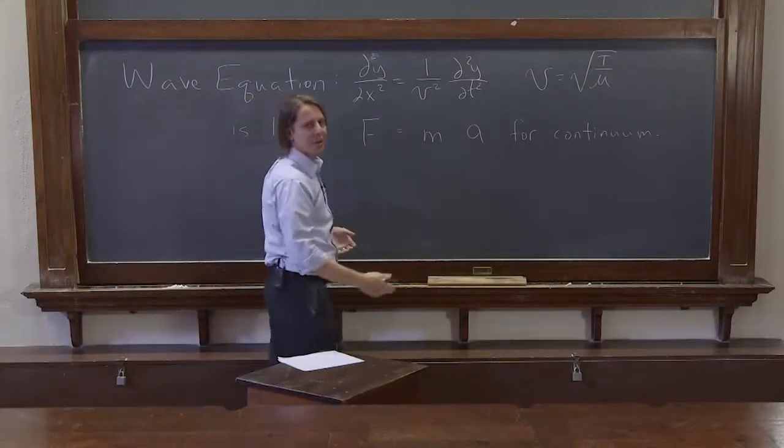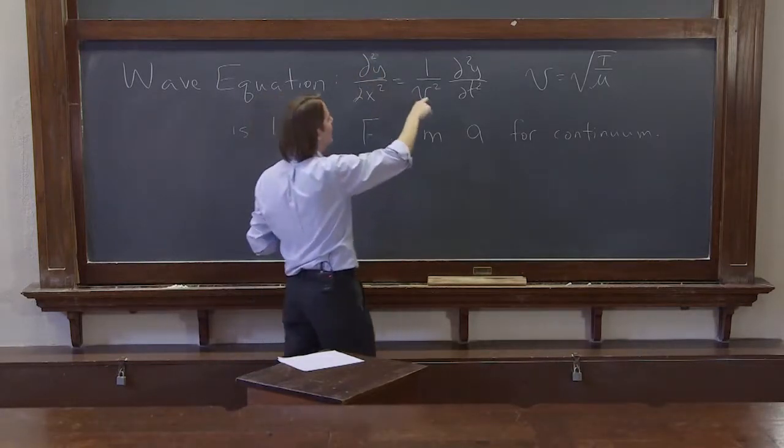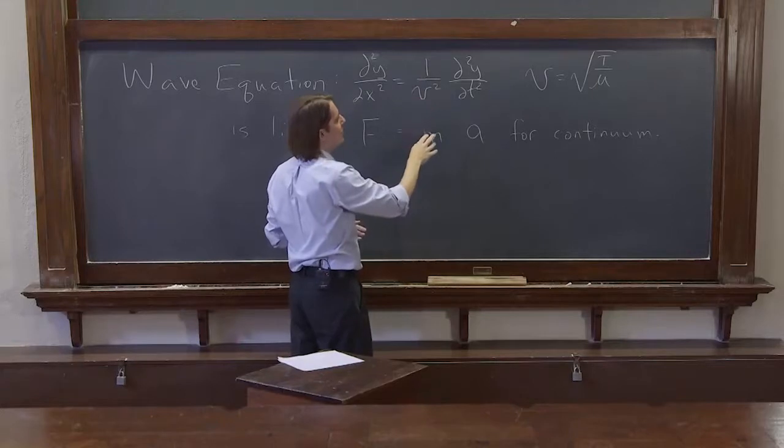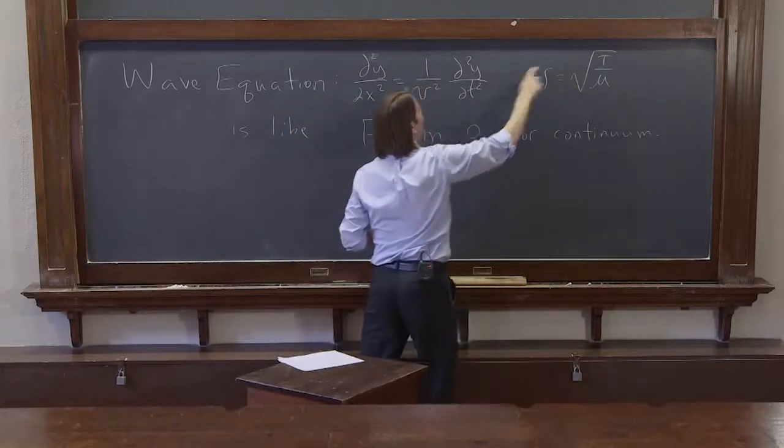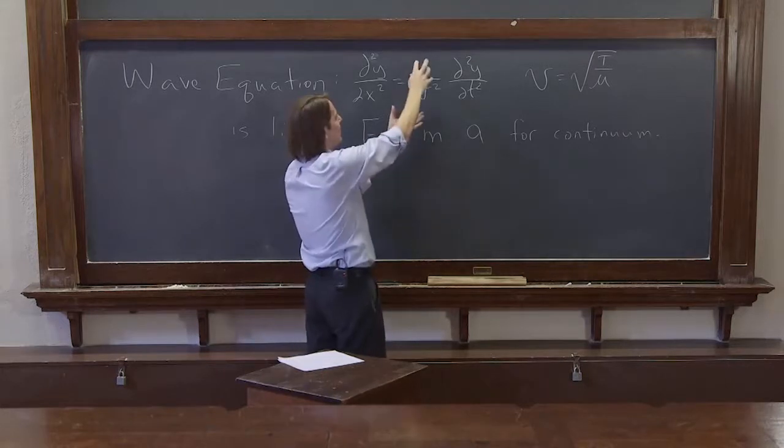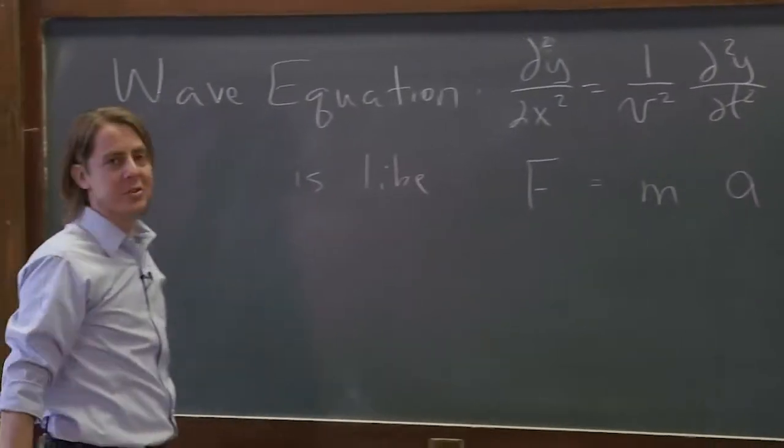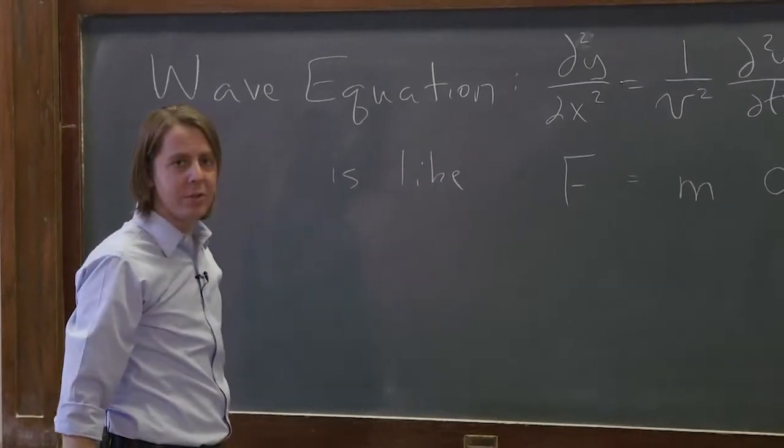It even looks like F equals ma. If you ever forget it, just remember F. Remember, this was the force due to curvature of the string. M, well, M is some property of the system. And actually, it does have M in the top since this is 1 over v². It's μ over the tension. But this is some characteristic of the system. And this is the acceleration. It really is basically just what happens when you apply F equals ma to a continuum.